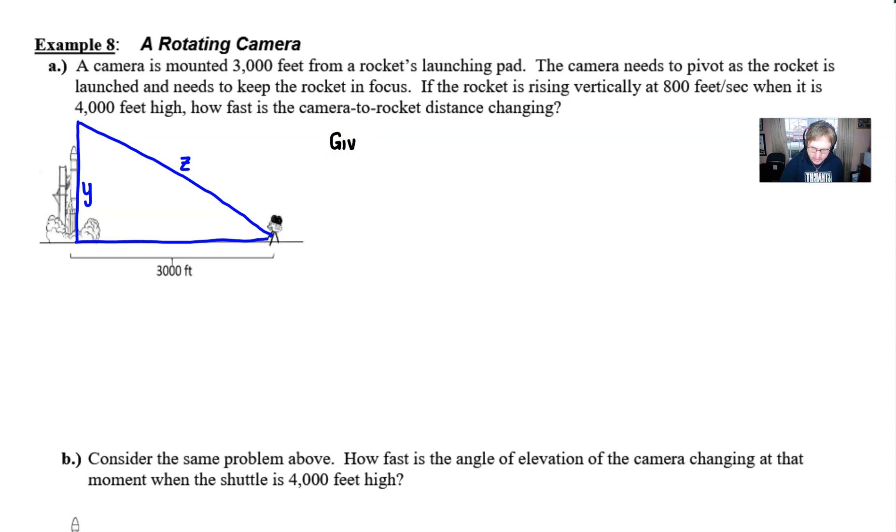So that's our picture. What are we given? Well, we are given the fact that the rocket is rising vertically at 800 feet per second. So we could call that dy/dt, and that is a positive 800. Thank goodness, because if it was a negative 800, this would be a very interesting launch. And we need a find. Our find is all about the question: how fast is the camera to rocket distance changing? That would be the rate of change of this length Z, the hypotenuse of the triangle. We want to find dz/dt, specifically when the rocket is 4,000 feet above the ground. That would make Y equal to 4,000.